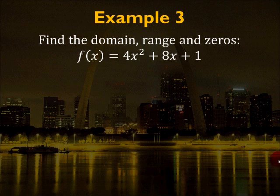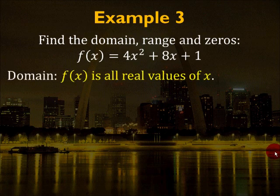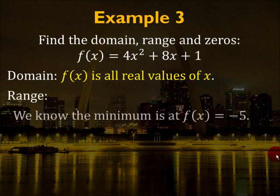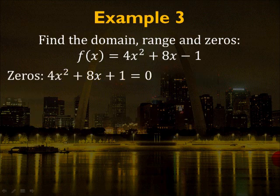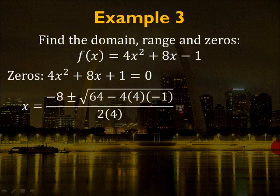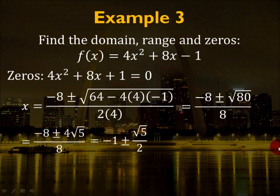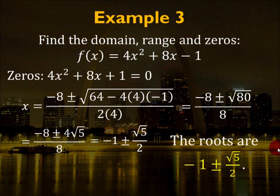Now find the domain, range, and zeros. The domain is all real values of x. For the range, since the minimum is -5, all values of f(x) must be greater than or equal to it, so the range is f(x) ≥ -5. To find the zeros, set f(x) = 0 and use the quadratic formula to get x = (-1 ± √5) / 2. Your roots are (-1 ± √5) / 2.